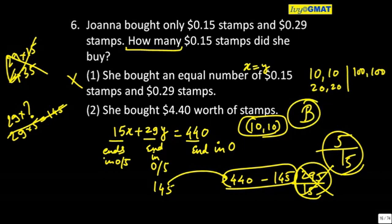Note that 29 times 2 will never give any number ending in 0 or 5, and 29 times 20 would be beyond 440. Since 440 ends in 0 and 15 times something always ends in 0 or 5, the third term must also end in 0 or 5 — confirming our approach is correct.